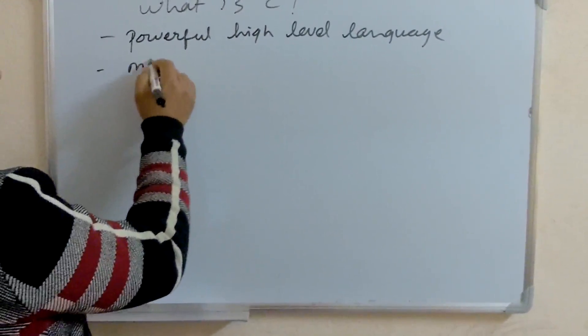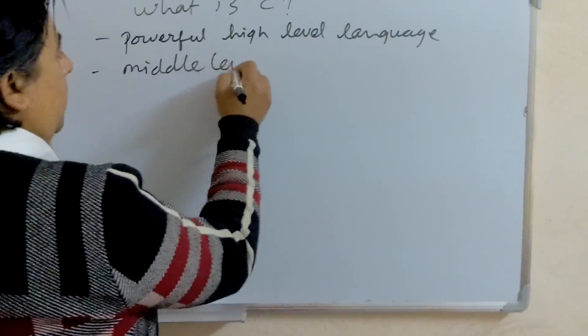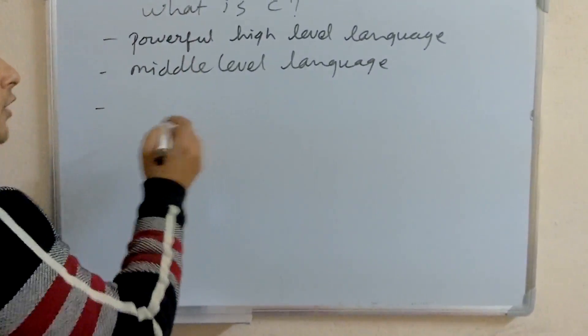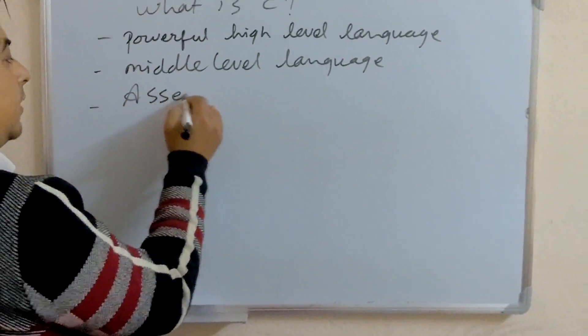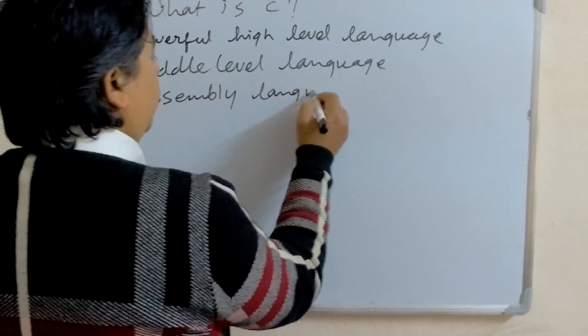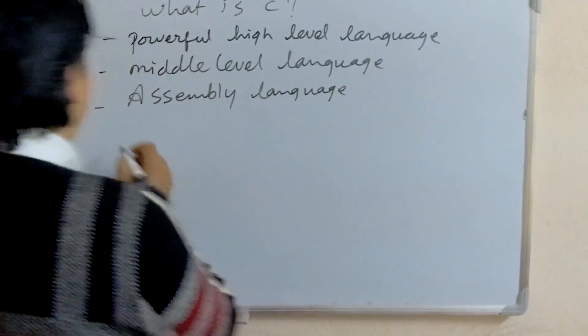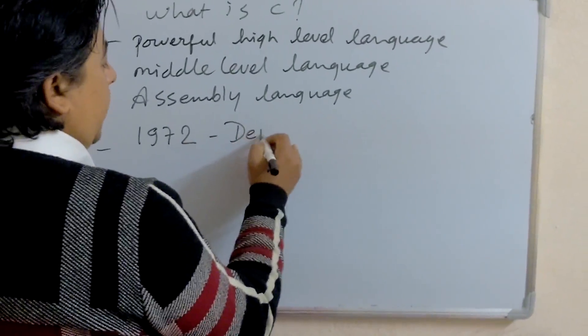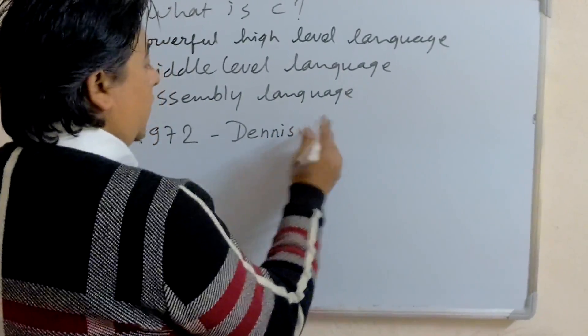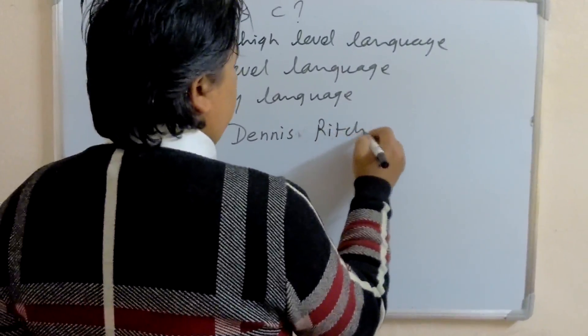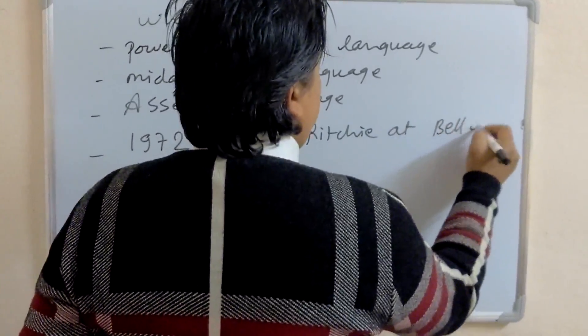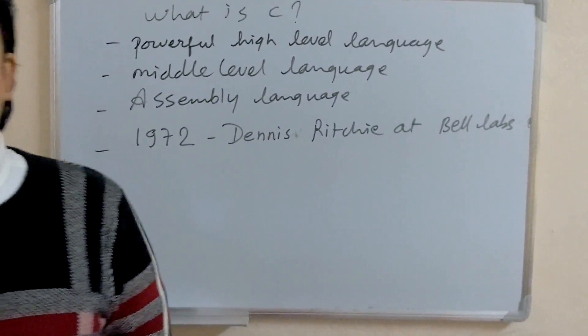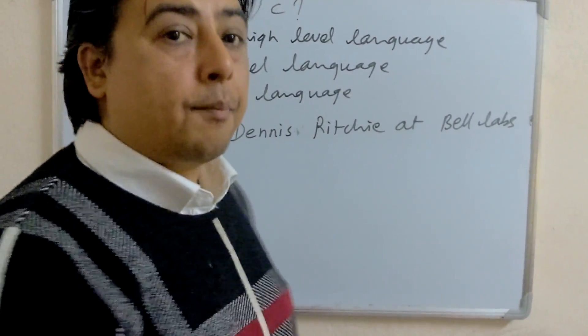That's why C is also known as middle-level language. This C program was written in assembly language and C was developed in 1972 by Dennis Ritchie at Bell Labs.